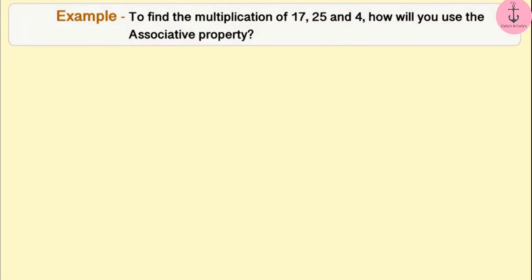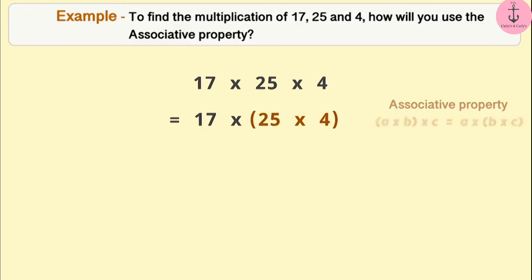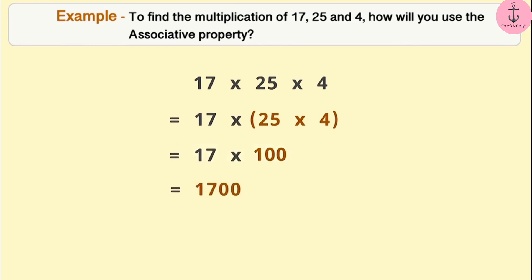Next example: to find the multiplication of 17, 25 and 4, how will you use the associative property? If we observe the numbers carefully, we can see that 25 and 4 can be multiplied very easily. Therefore, under the associative property, we can group the numbers as 17 × (25 × 4). The product of 25 and 4 is 100, and 17 × 100 equals 1700.